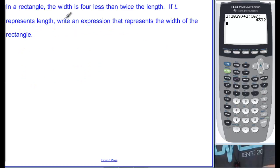Second example. In a rectangle, the width is 4 less than twice the length. If L represents length, write an expression that represents the width of the rectangle. So we want to know width is equal to what? They tell us here that the width is, so that usually means equal, and then they're going to tell us what it is. It's 4 less than twice the length.